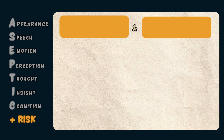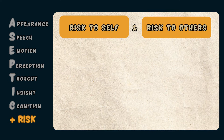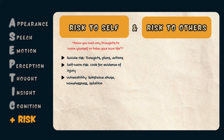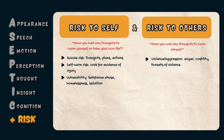After completing ASEPTIC, don't forget to complete a risk assessment, which is a key component of the MSE. This includes the patient's risk to themselves and their risk to others. When assessing risk to themselves, ask 'Have you had any thoughts to hurt or harm yourself or take your own life?' Assess for suicidal thoughts, plans, and whether they have acted on them. Also assess self-harm risk and identify risk factors such as substance abuse, homelessness, or isolation. When assessing risk to others, ask 'Have you had any thoughts to harm others?'